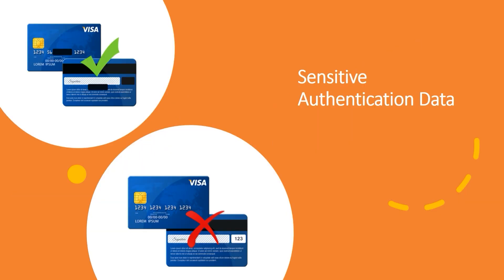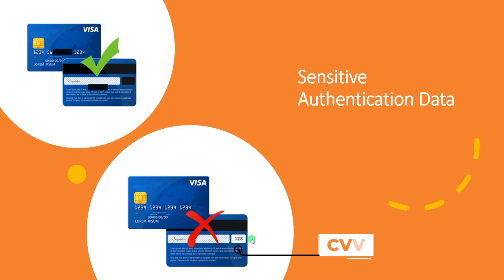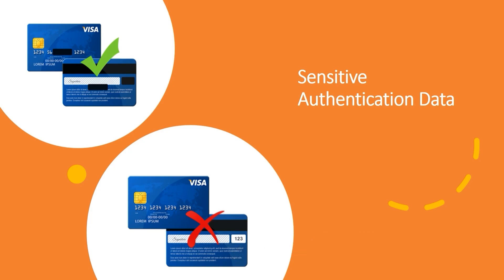Sensitive Authentication Data, or SAD, is security-related information which includes the card validation codes or values — CVV. If you don't know what those are, basically it's the three-digit number normally found at the back of the card. It may also include full track data — the magnetic stripe or chip data — or the PIN or PIN blocks.